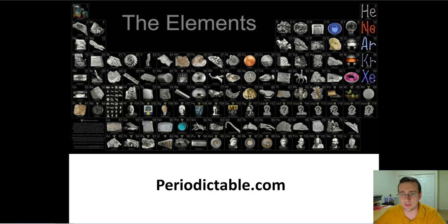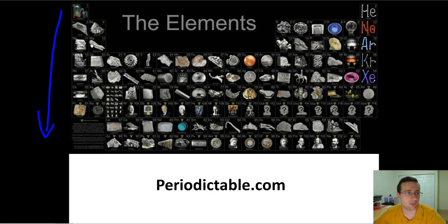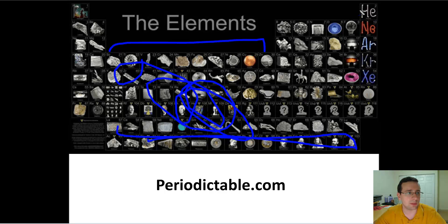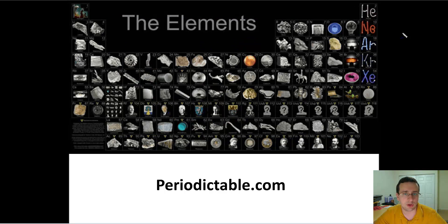You also have the pattern of periods, where each period is a different row. As you go down the periods, you increase the shells. As you go towards the columns, those represent the number of electrons on the last shell — excluding, of course, the D-block and the F-block elements. So if you exclude those, the other columns are going to be increasing the number of valence electrons on the last shell.